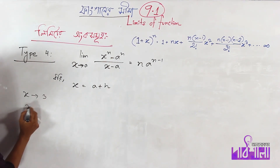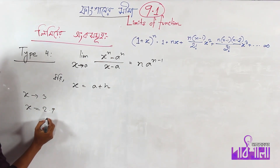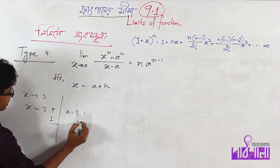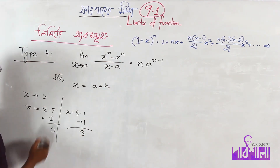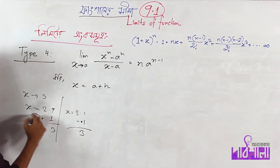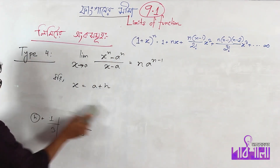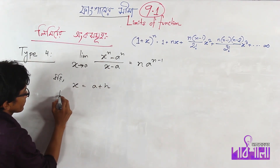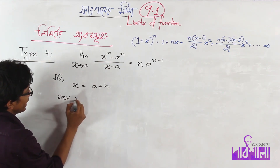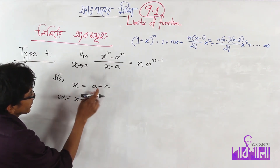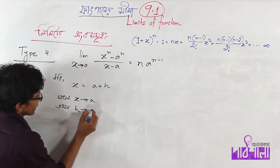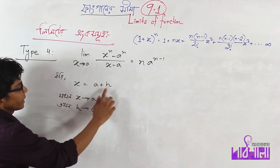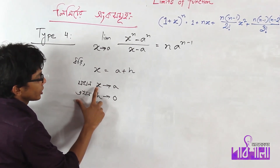If x tends to 3, then x tends to 2.9, then h tends to 0.1. As x tends to a, h tends to 0. So as x approaches a, we can replace the limit in terms of h, where h tends to 0.